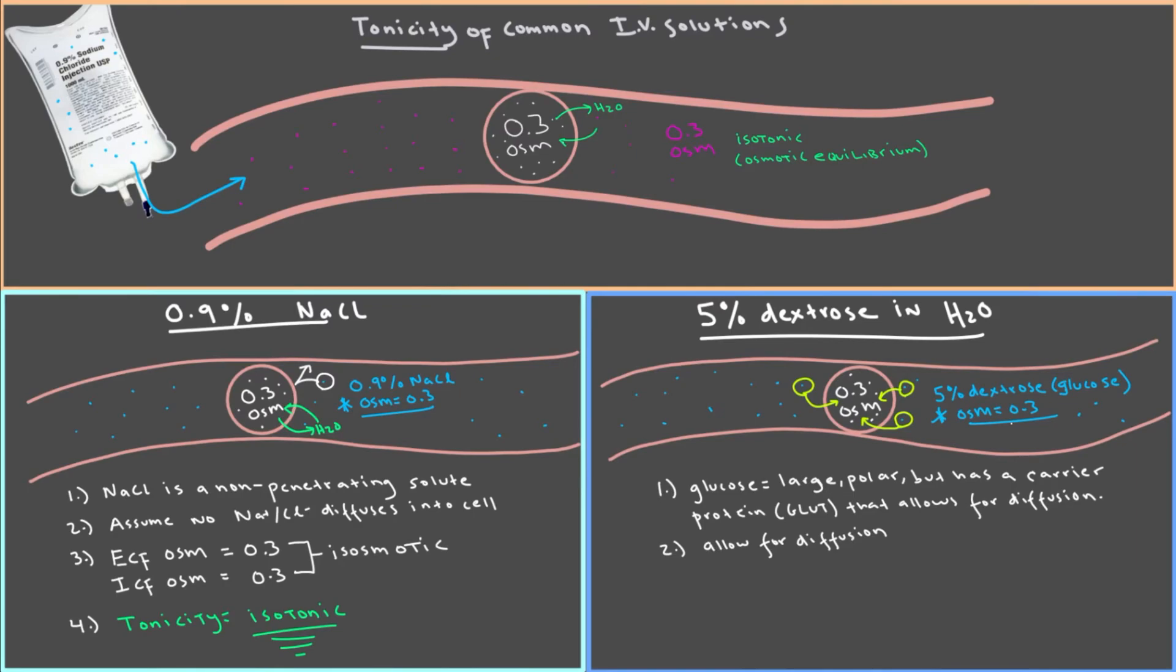But then that glucose is also metabolized. So then more diffuses in. And then more is metabolized. This cycle will repeat until all the glucose that was added in the solution goes into the cell and is broken down. Ultimately, effectively leading to no glucose remaining inside or outside the cell.